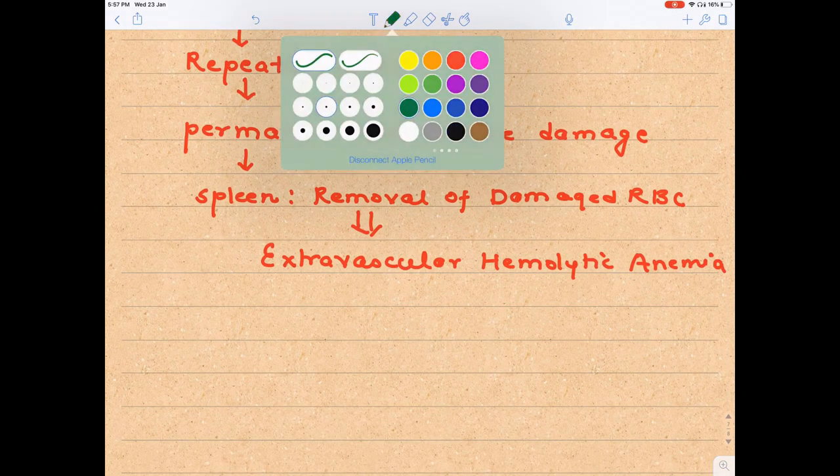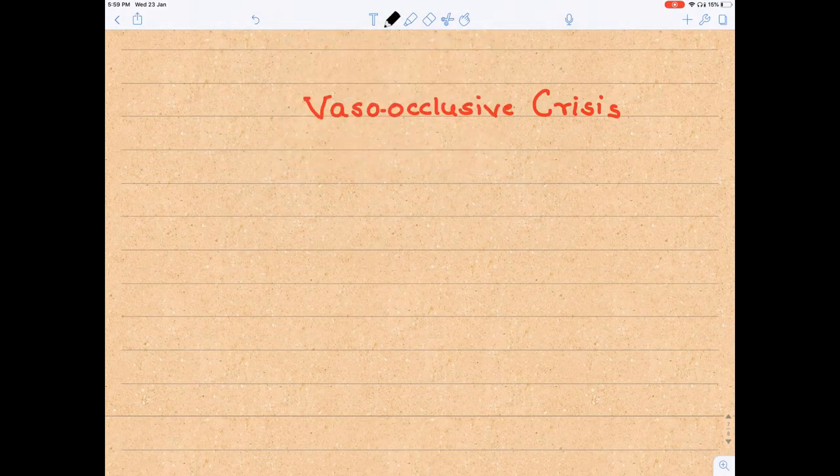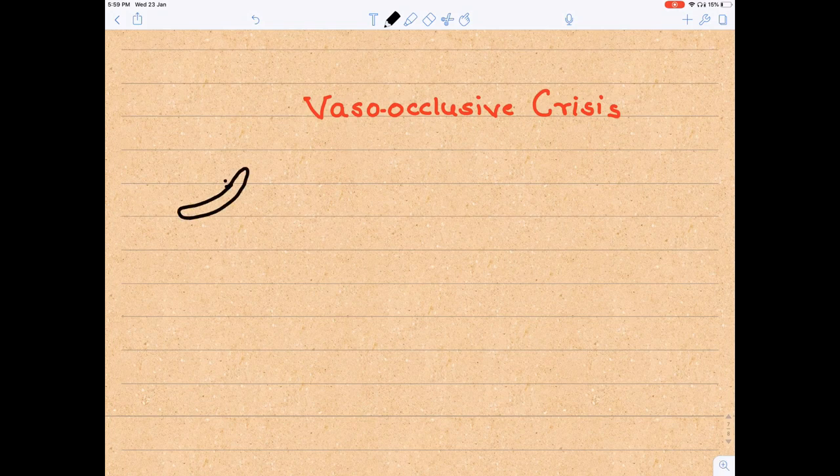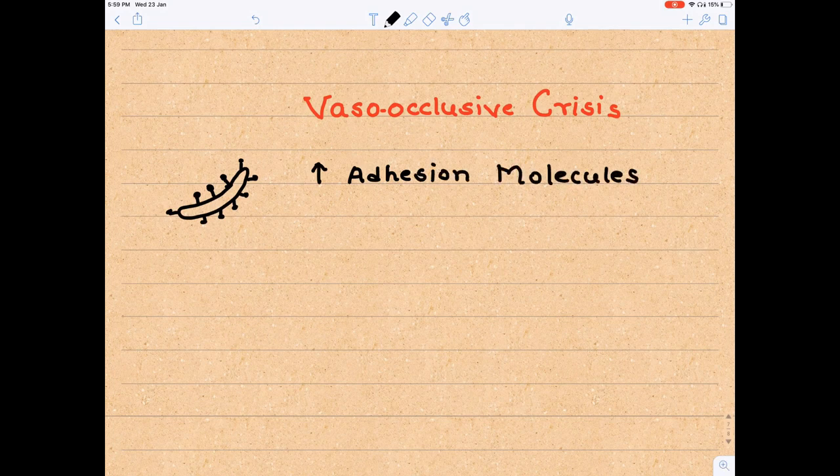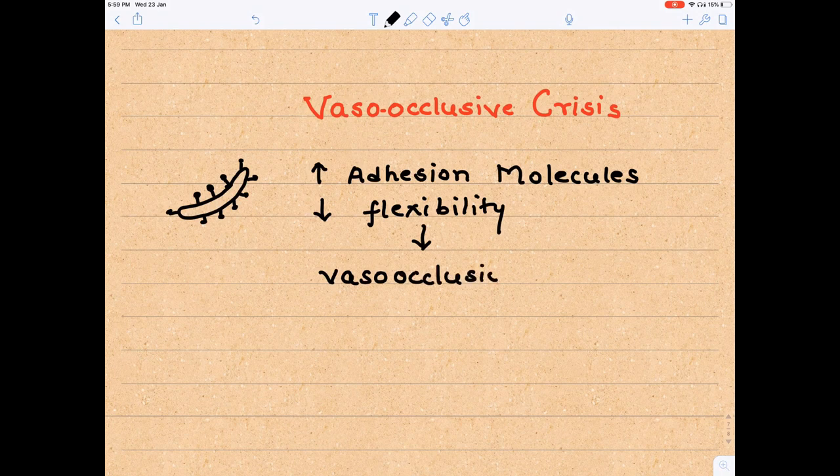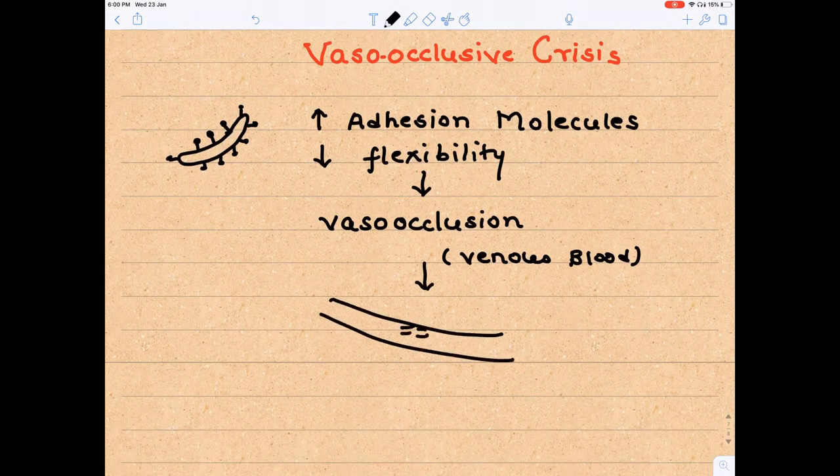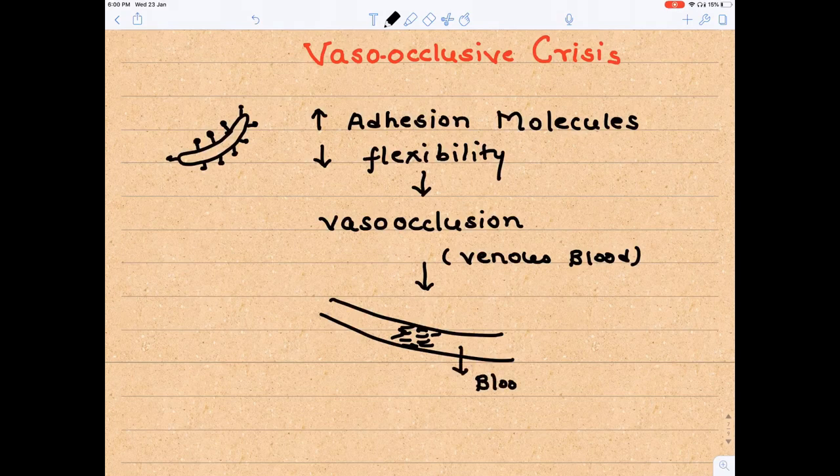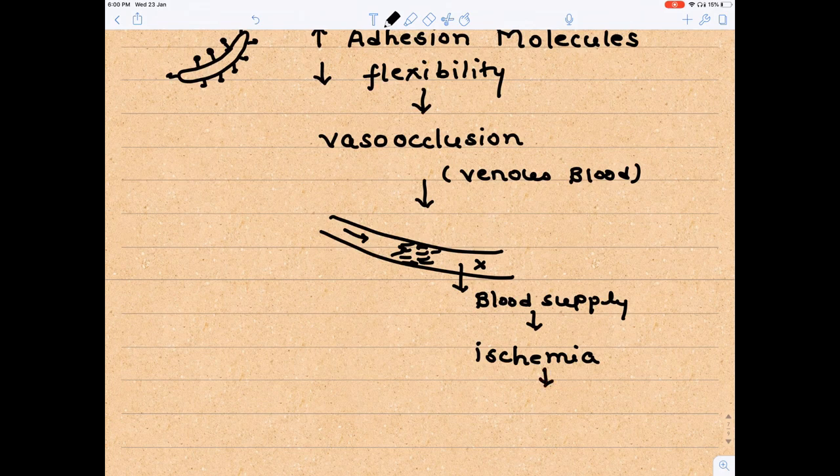But there is a twist: vaso-occlusive crisis. What is that? Remember, the sickle-shaped RBC has increased expression of adhesion molecules, making RBC very sticky and gluey. Plus, there is decreased flexibility. Because of these two features, whenever the RBC crosses the venous blood, there will be phenomenon of vaso-occlusion. When there is vaso-occlusion, it will lead to ischemia or decreased blood supply, which will lead to hypoxia. Due to hypoxia, there will be tissue damage, which will be presented to us as pain, swelling, and many other features.